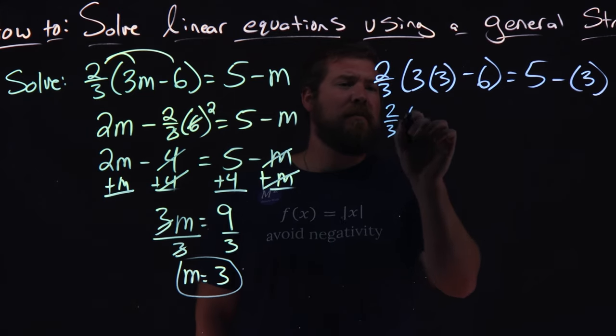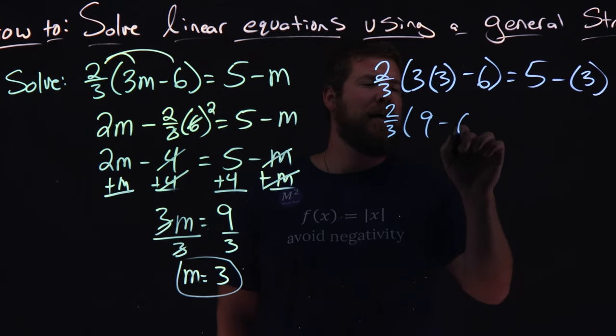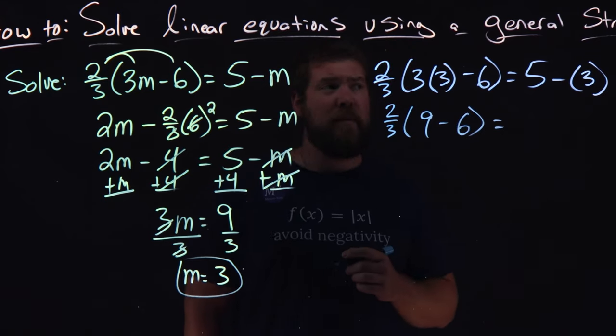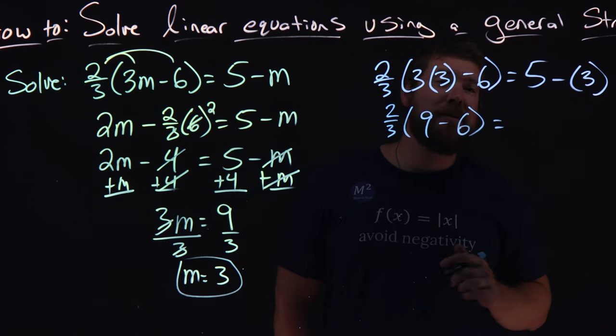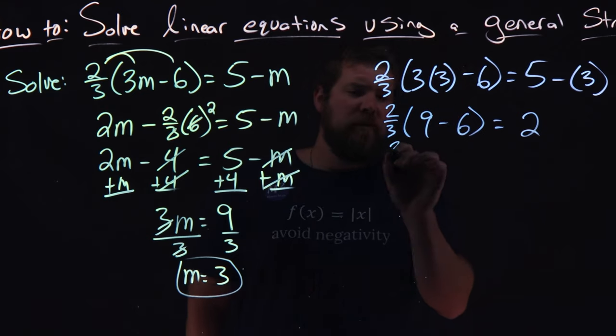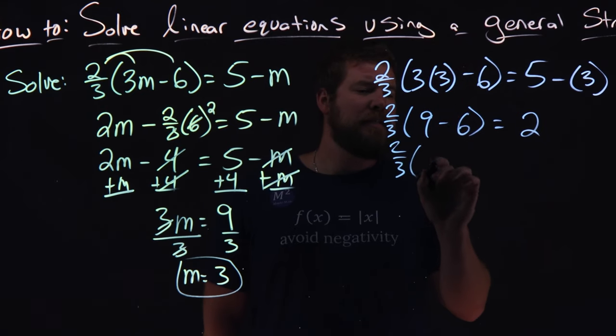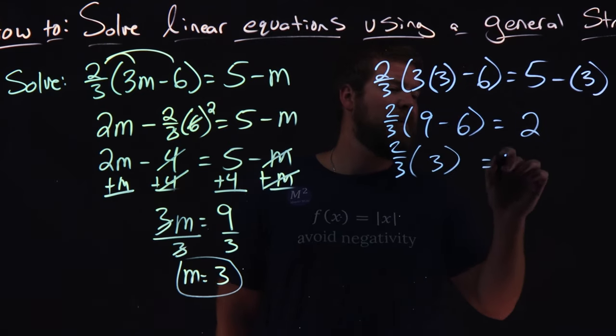So again, 2 thirds, I'm going to keep them on the outside. 3 times 3 is 9, minus 6. We're following our order of operations here. 5 minus 3 is a good old 2. 2 thirds still on the outside. 9 minus 6 is also 3, and we still have a 2 on the right.